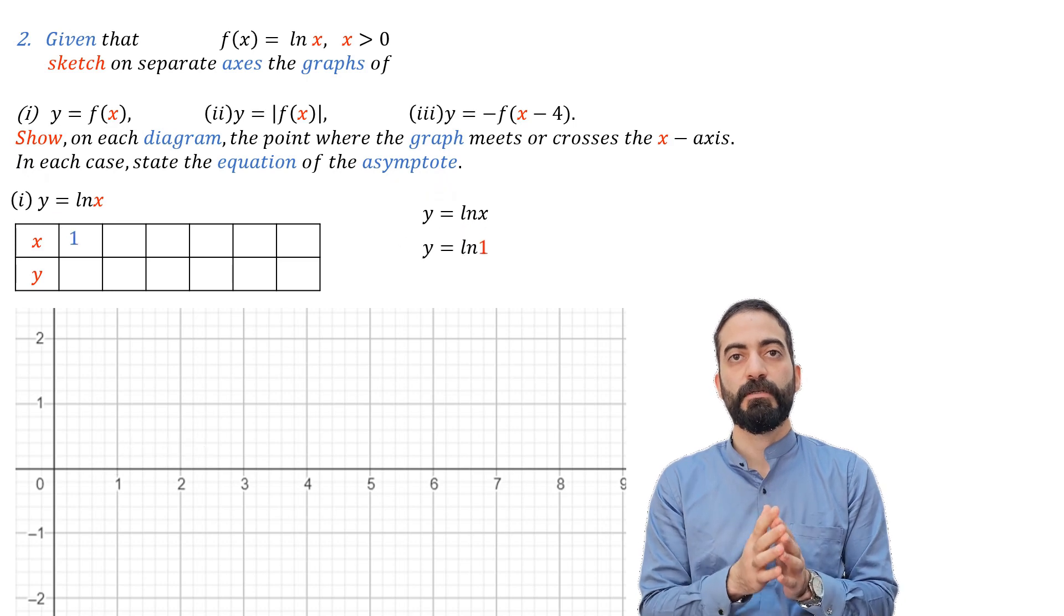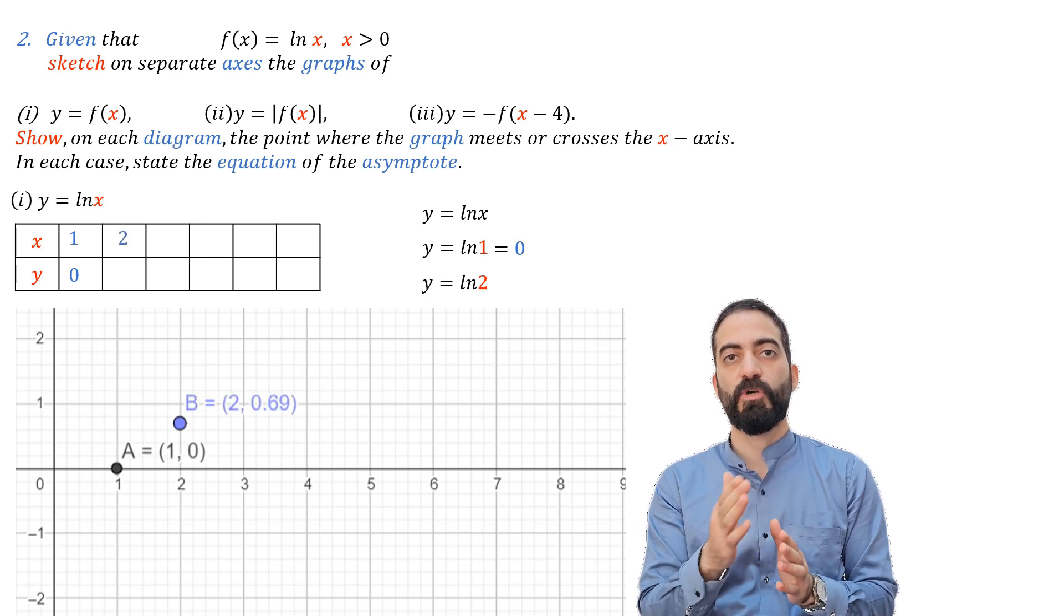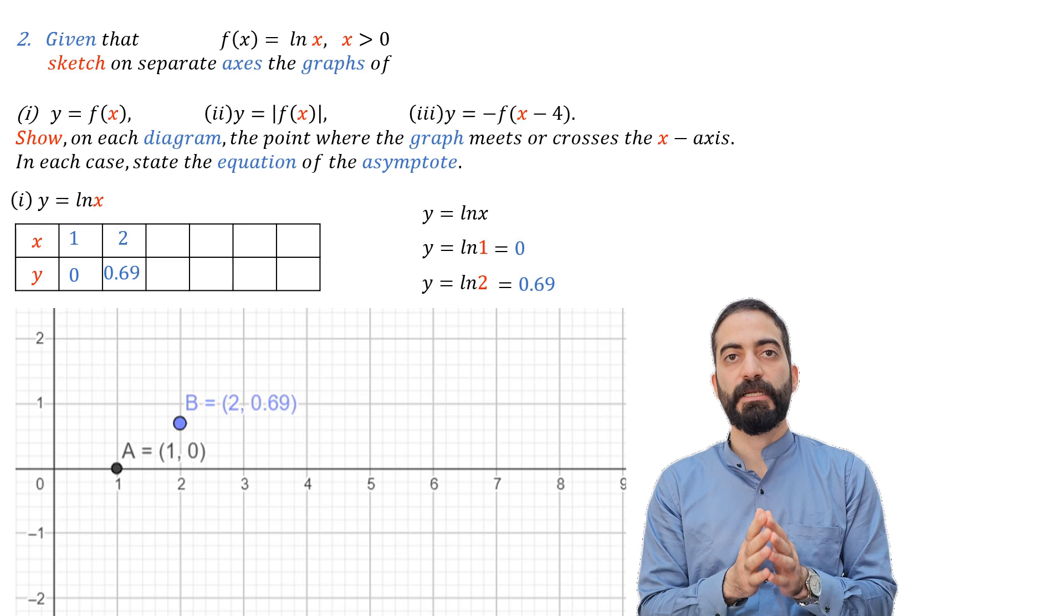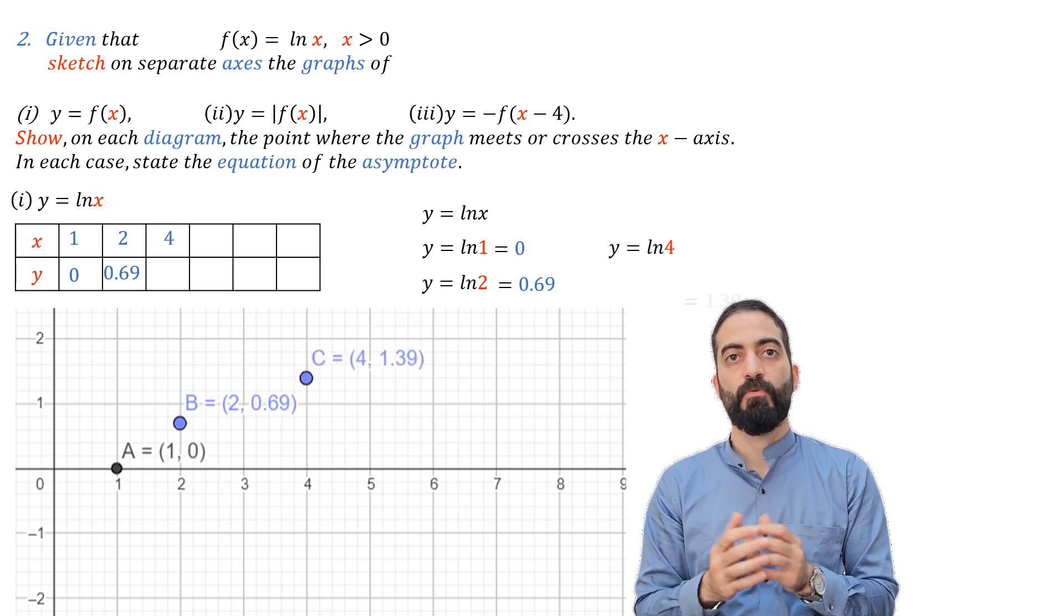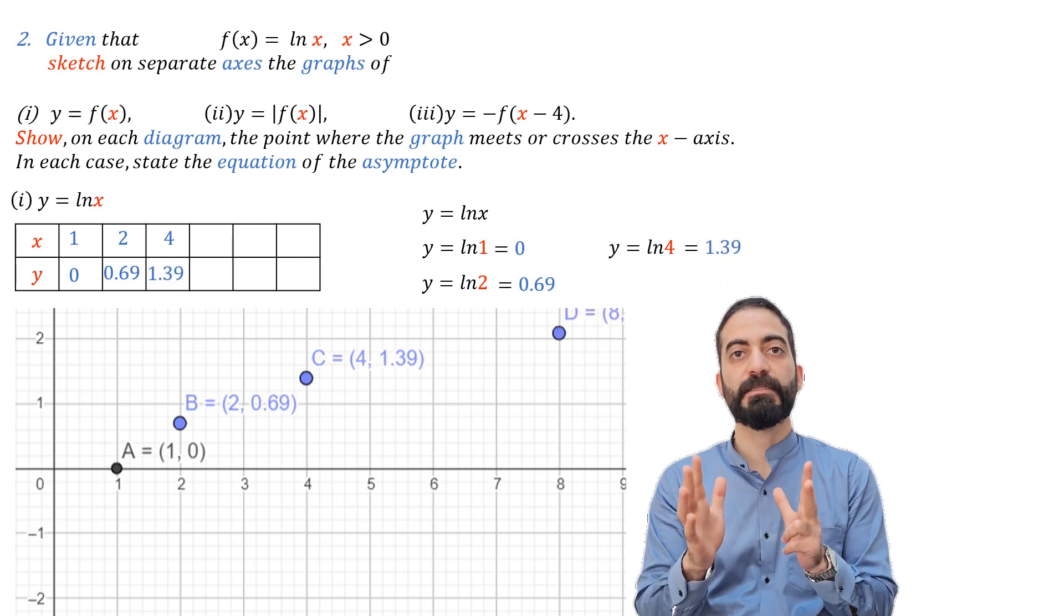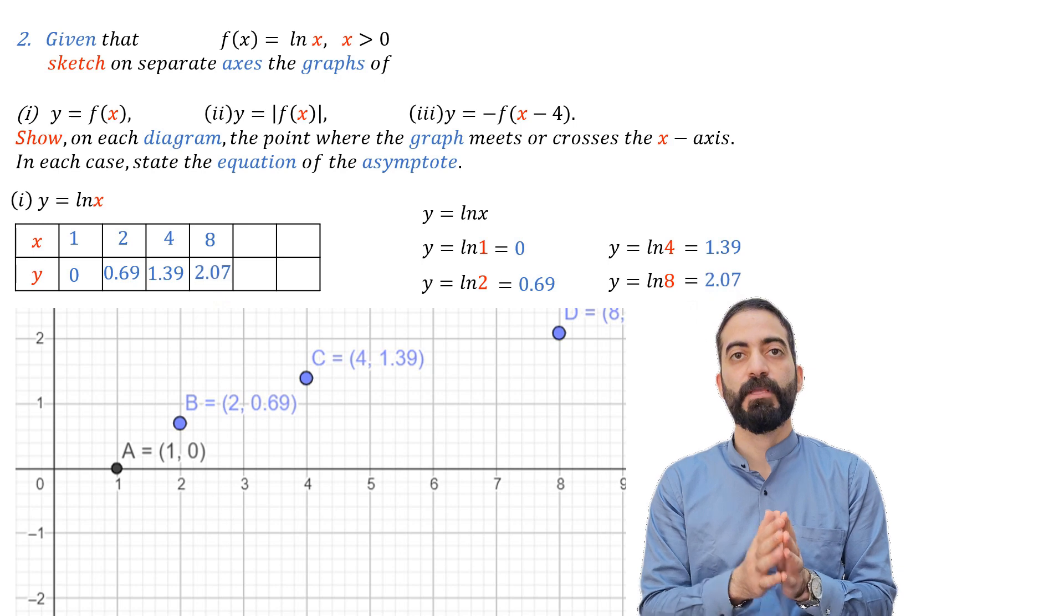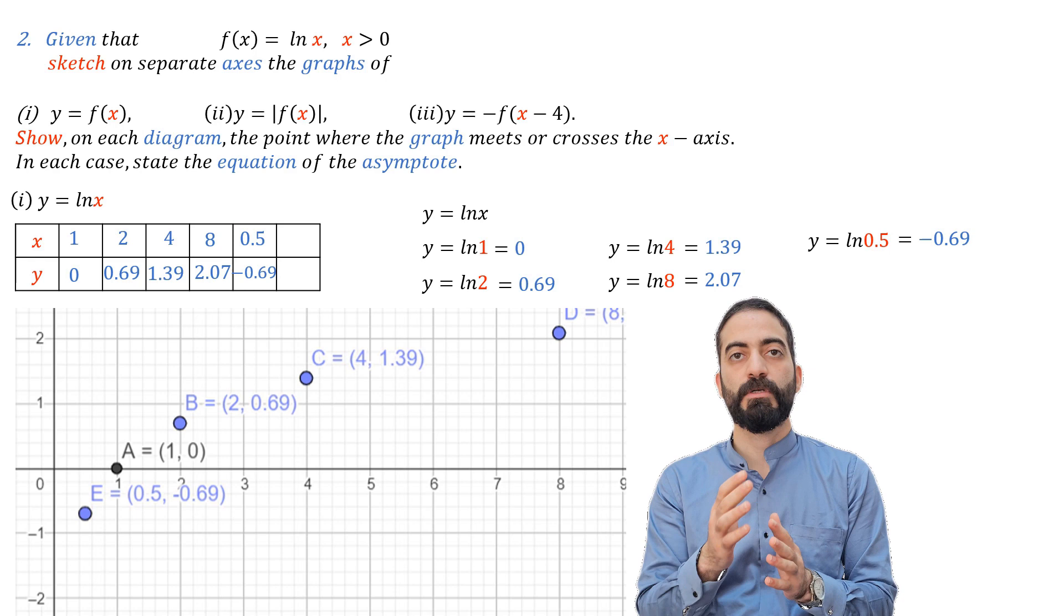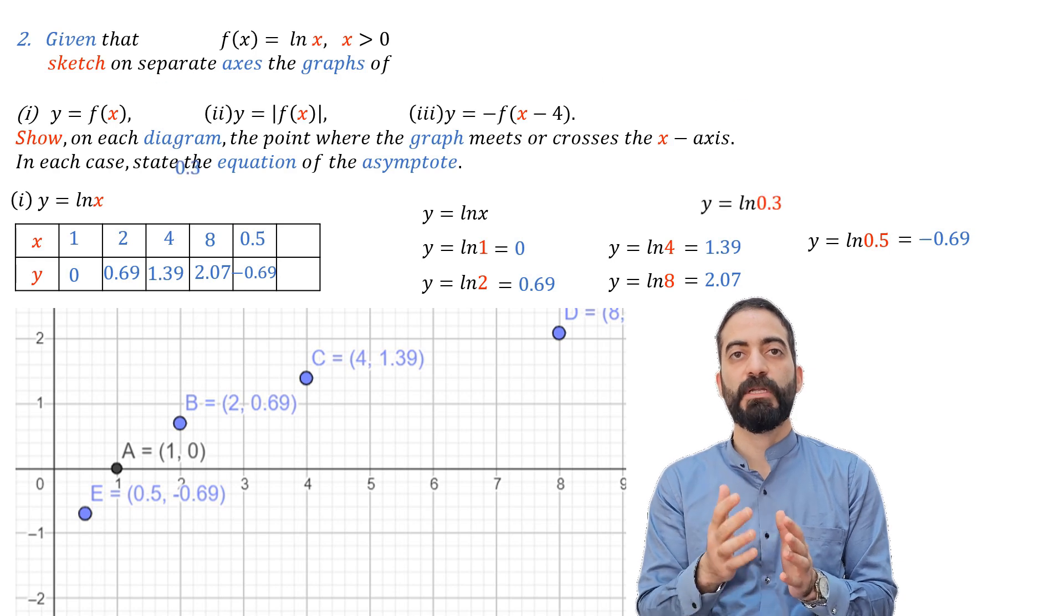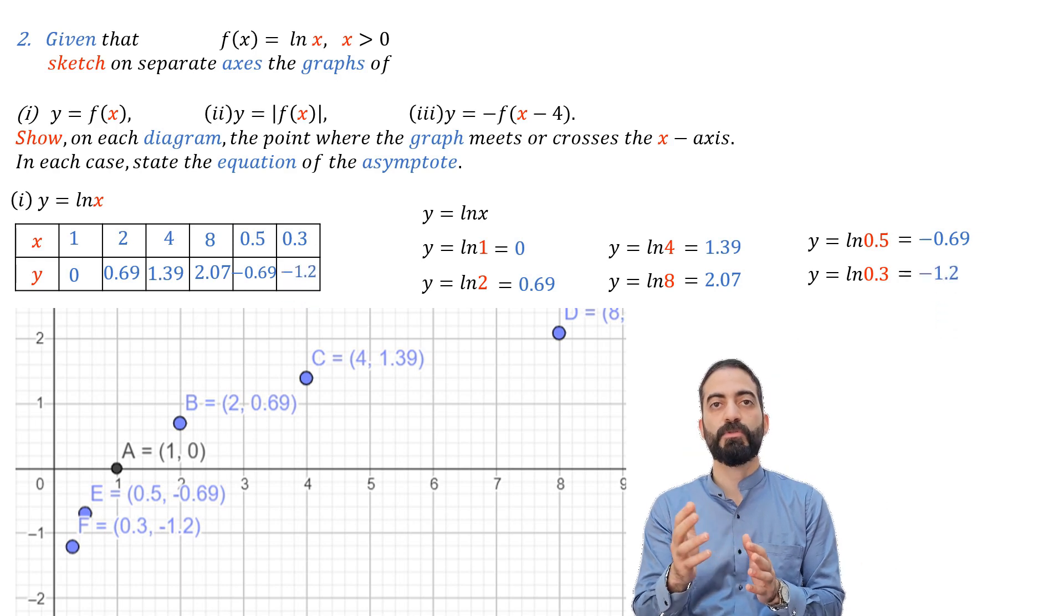When x equals 1, y is 0. When x equals 2, y equals 0.69. When x equals 4, y equals 1.39. When x equals 8, y equals 2.07. When x equals 0.5, y equals minus 0.69. And when x equals 0.3, y equals minus 1.2.